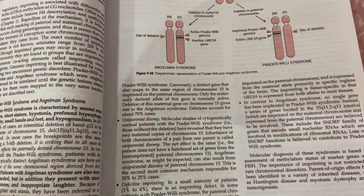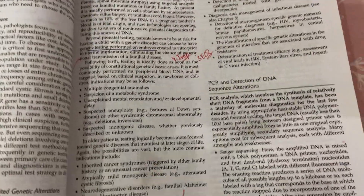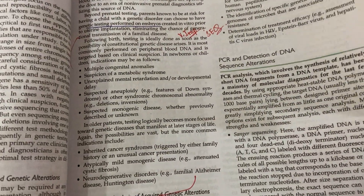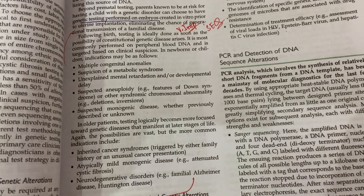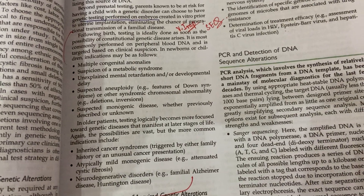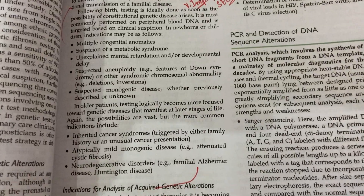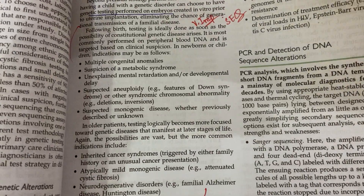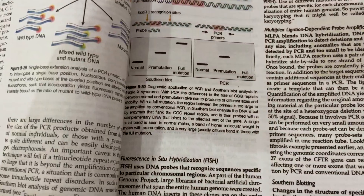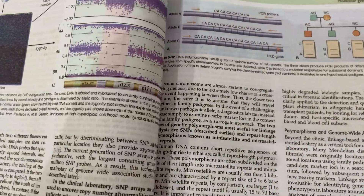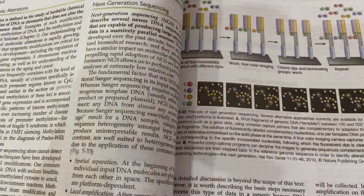A very important SQ of this chapter is genetic testing performed on embryos. All points under this topic are very important from the SQ point of view. This concludes the overview of chapter five on genetic disorders.